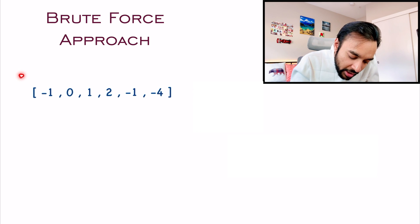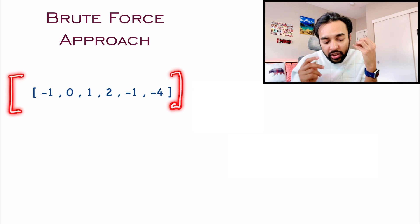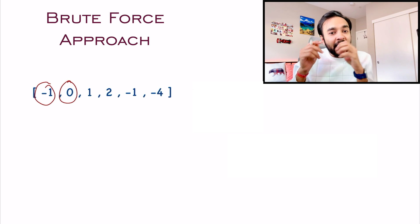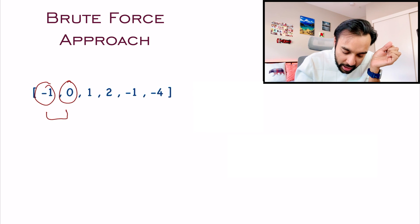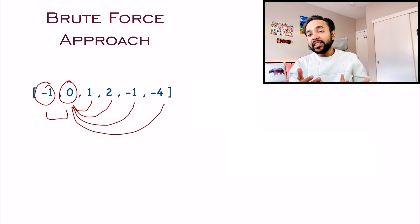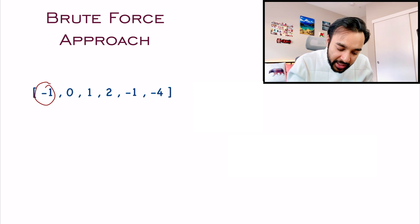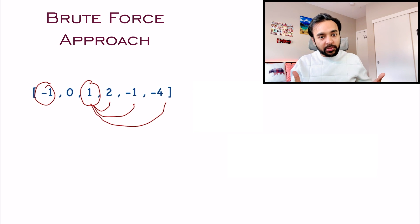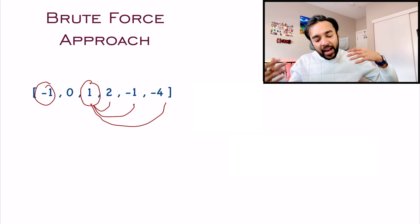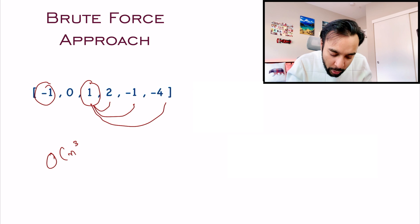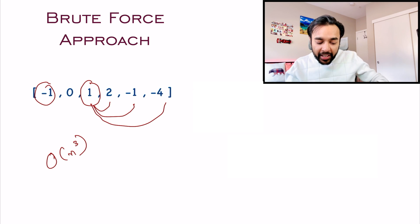Coming back to this problem, you are given a sample array and you have to find the triplets. What is the most naive or brute force way to think about it? The most naive way would be: you pick two elements, add them, then pick a third element. So first you pick zero, then one, then minus one, then minus four — these are all the possible triplets — and you sum them to see if the sum is zero. If yes, you found a triplet. This will give you all the possible combinations, but this approach will have a time complexity of O(n³), and certainly that is not desired. We want a better approach.